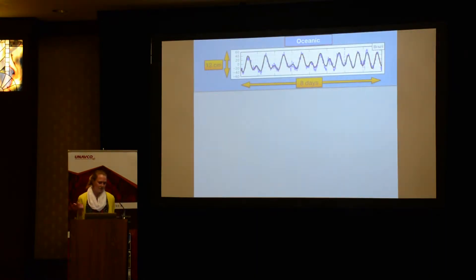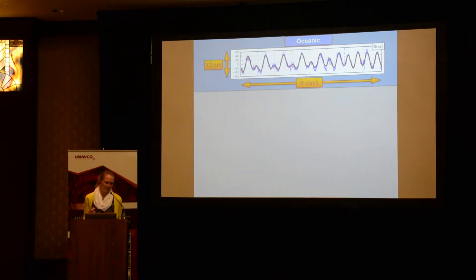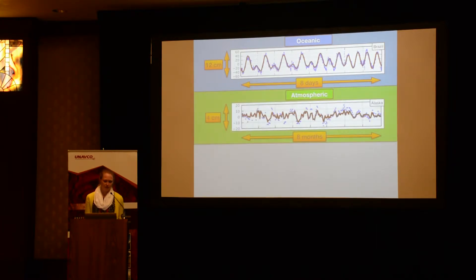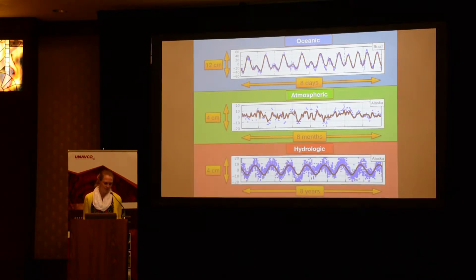Here we have a kinematic GPS time series spanning eight days, which is dominated by loading due to the ocean tides. The blue dots represent the GPS inferred vertical surface displacements, and the black line shows the model, which in this case is the tidal harmonic fit to the data. The earth's atmosphere and continental hydrosphere also load the surface, and here we can see earth's response to atmospheric loading over an eight month period, as well as earth's response to seasonal changes in water storage over an eight year period.